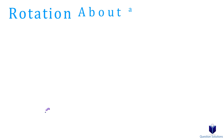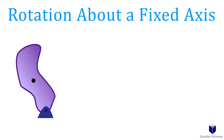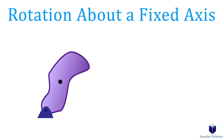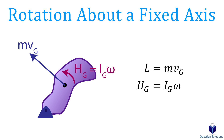The next case is when a rigid body is rotating about a fixed axis. The linear momentum is the same as before, but now there is angular momentum. Angular momentum can be found by multiplying the mass moment of inertia by the angular velocity. So linear momentum is mass times velocity, and angular momentum is mass moment of inertia times angular velocity.